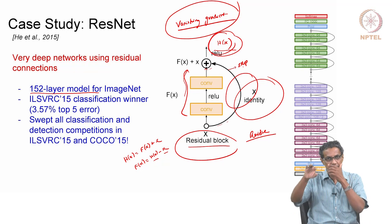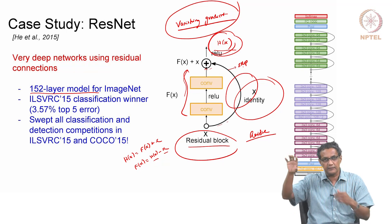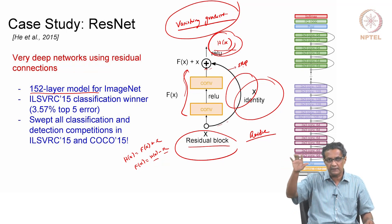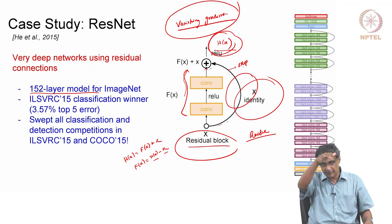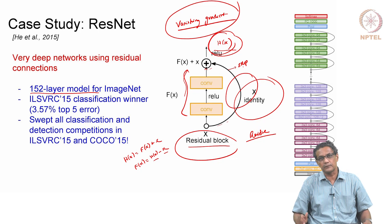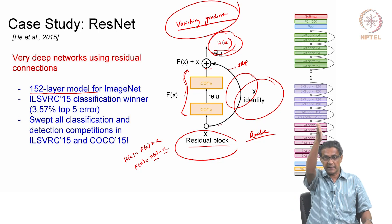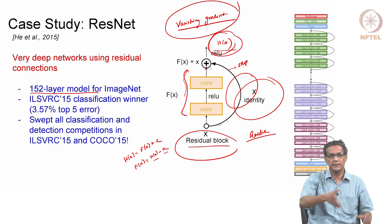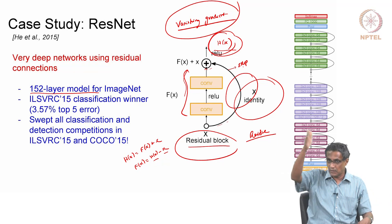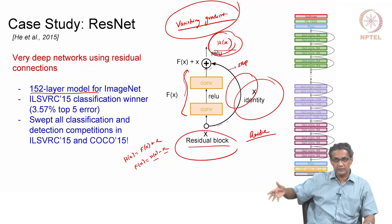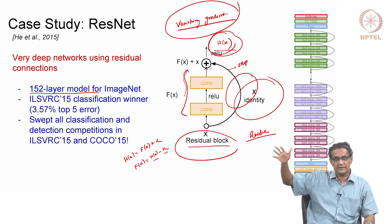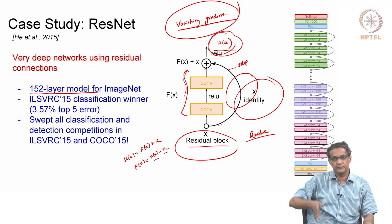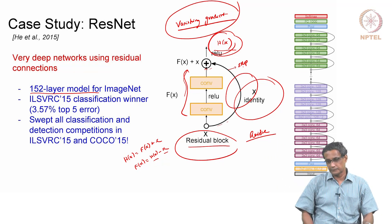This skip connection was given as an argument that if you wanted to propagate the gradient, there is now an alternate path for them to flow. Because if they had to come in one line, it is not at all possible through 150 layers, but now there are alternate paths which can allow the gradient to flow.